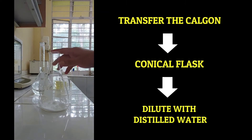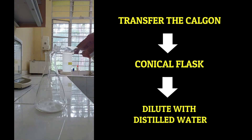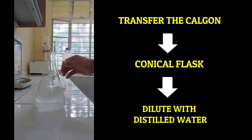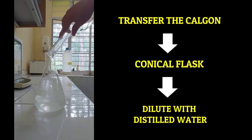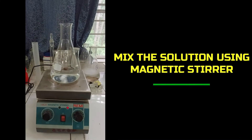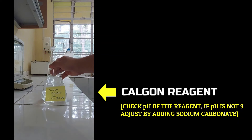Dilute the Calgon with 500 ml of distilled water and shake it for the reagent to dissolve. Use a magnetic stirrer to dissolve the reagent. Now we have a Calgon reagent ready for texture analysis. Remember, before starting texture analysis, check the pH of the reagent. If the pH is not 9, add sodium carbonate to bring the pH of the Calgon reagent to 9.